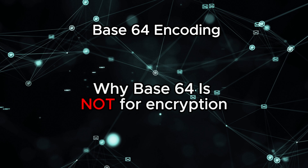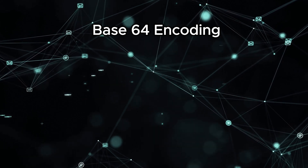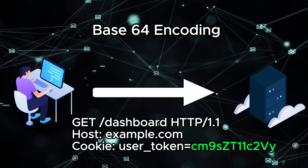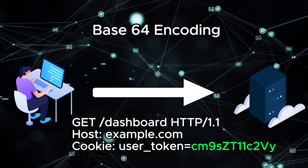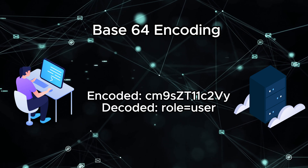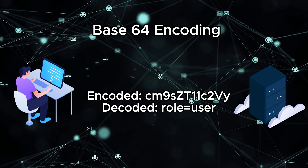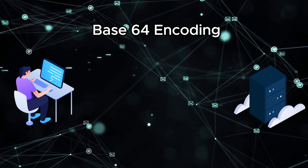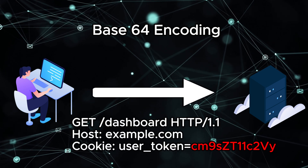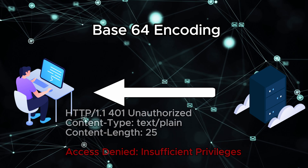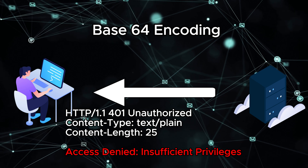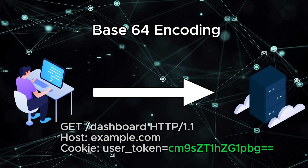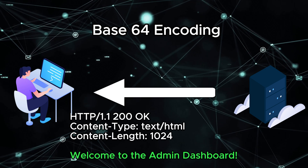Here is why Base64 is not for encryption. Imagine a scenario where a web application uses a Base64 encoded token to manage user roles. We start by inspecting the HTTP request and notice a cookie named User_Token containing a Base64 encoded value. Let's decode this token to reveal its contents — once decoded, we find that the token value translates to 'role=user', meaning our current user has a standard role. Upon sending the request, the server checks the user's role based on the User_Token cookie. If the role is 'user', the server responds with unauthorized. Now let's see how Base64 encoding enables us to modify the user role: we decode the token, change the role from 'user' to 'admin', and encode it back. Thanks to this modified request, the server grants the user elevated privileges, believing them to be an administrator.